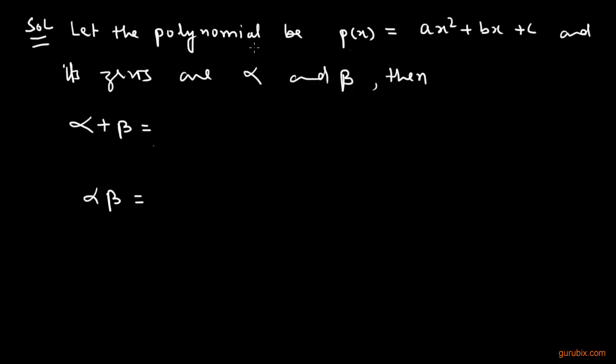First we let the polynomial be p(x) equals to ax square plus bx plus c and its zeros are alpha and beta.